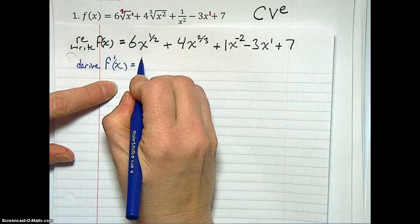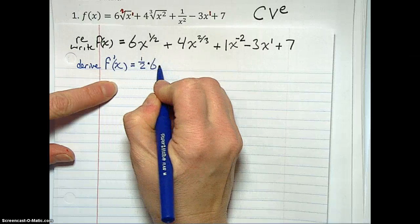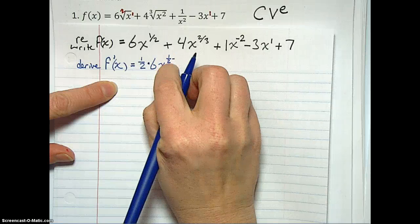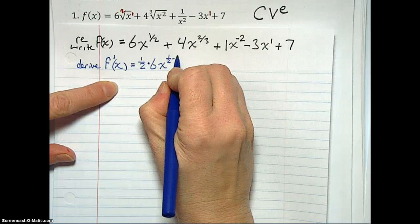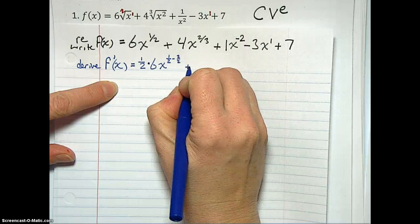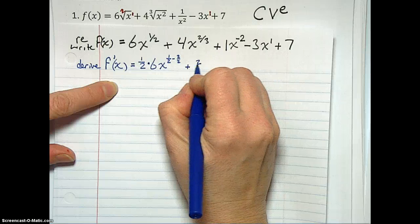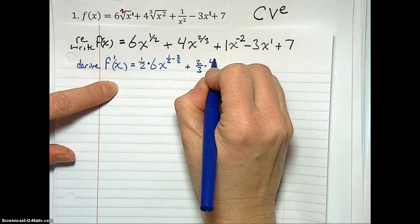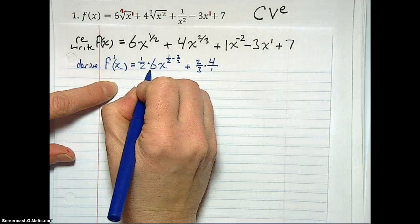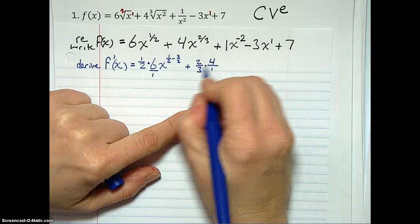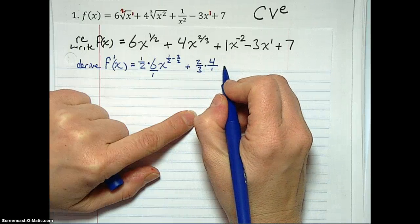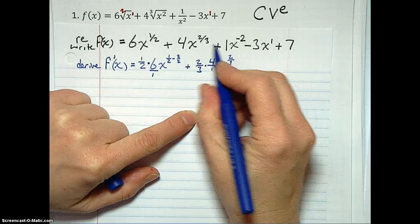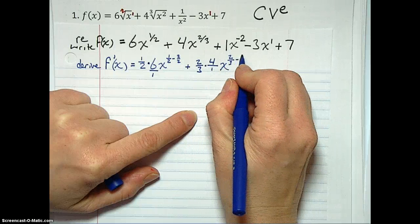We bring down our exponent, 1 half. We multiply by our coefficient, 6. We keep our variable, and then we lower our exponent by 1. Since it's halves, we need a common denominator, so we're going to subtract 2 halves from it. And then we've got plus. We bring down our exponent, 2 thirds, multiply by our coefficient. We could have done that with our 6, except it doesn't quite line up with our 1 half now. We've got x to the 2 thirds, and here again we need to subtract 1, but this time the denominator is 3, so we're going to subtract 3 thirds.